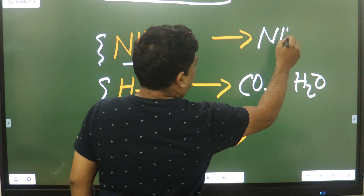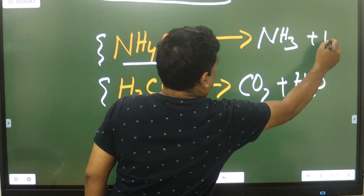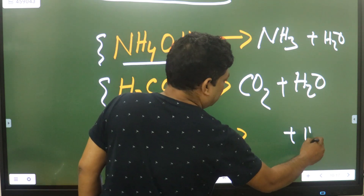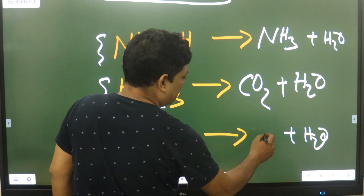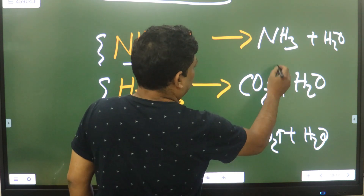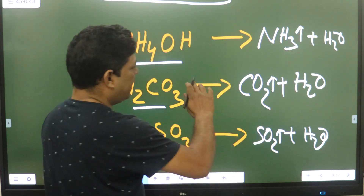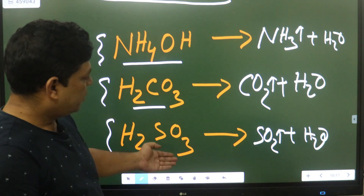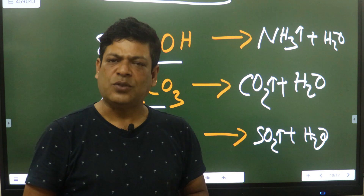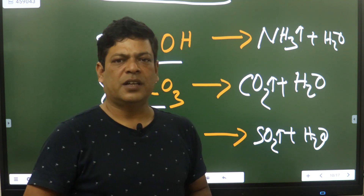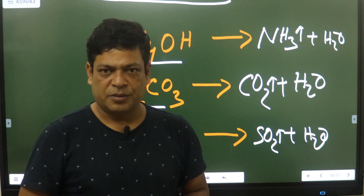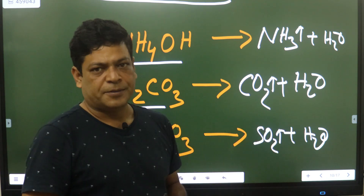NH3 plus water. The same thing is that the compound is in the form of H2CO3 and H2SO3. These are the protector gas compounds.